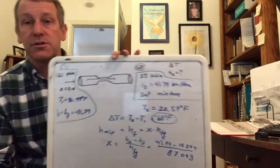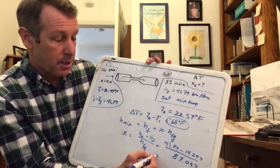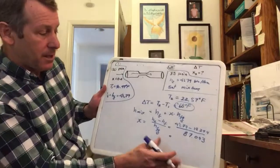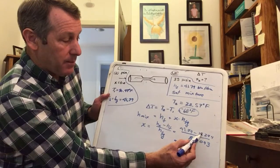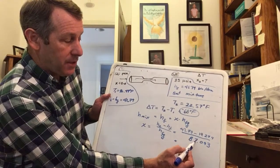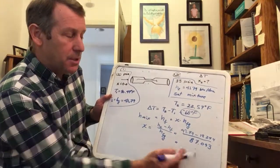All those are BTUs per pound mass, so the quality is going to come out as unitless. If you bear with me for just a second, let's see, we'll just estimate it really quickly. 41 minus 19, that's going to be about 22, about 87, it's going to be about 0.2 something and you can finish that off yourself.